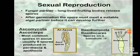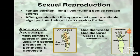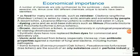In sexual reproduction, it is done by spores. The fungal partner produces long-lived fruiting bodies that release spores. After germination, the spore must meet a suitable algal partner before it can develop further into a lichen. Ascomycota reproduces through ascocarps with spores in asci, produced in perithecia and apothecia; Basidiomycota reproduces through basidiocarps.